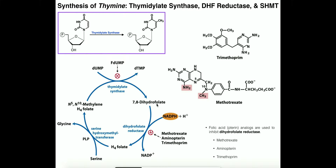This dihydrofolate is the precursor to all tetrahydrofolates. It will go through a couple of reactions to get back to N5-N10-methylene tetrahydrofolate. Dihydrofolate is reduced to tetrahydrofolate by the enzyme dihydrofolate reductase, and this reaction consumes an NADPH. Then the enzyme serine hydroxymethyltransferase — which we also see in serine catabolism and glycine synthesis — converts tetrahydrofolate back into N5-N10-methylene tetrahydrofolate. This is a pyridoxal phosphate-dependent enzyme.